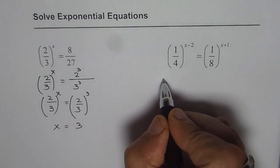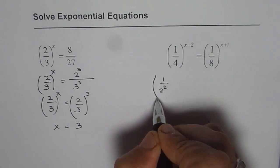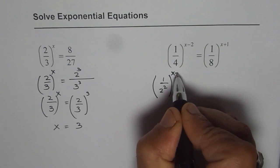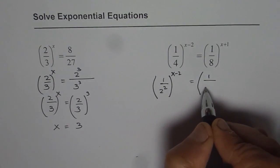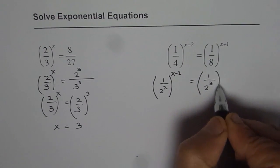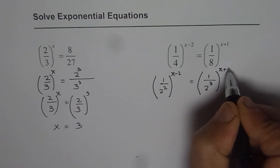So we can write this as 1 over 2 squared to the power of x minus 2, and 8 can be written as 1 over 2 cubed to the power of x plus 1.